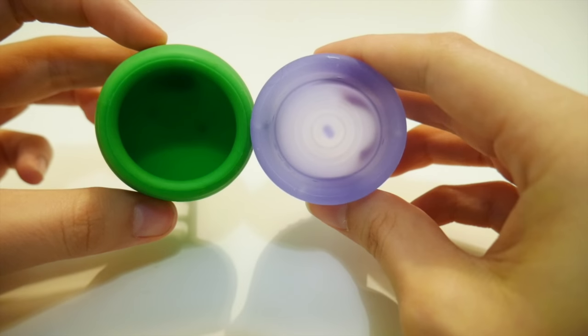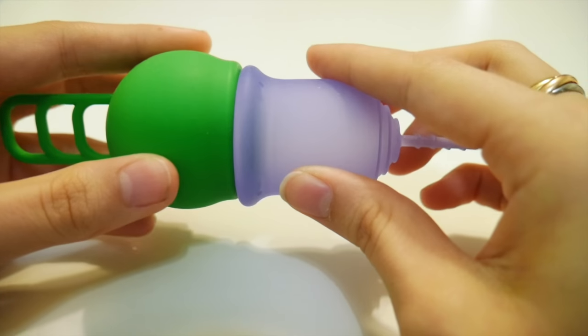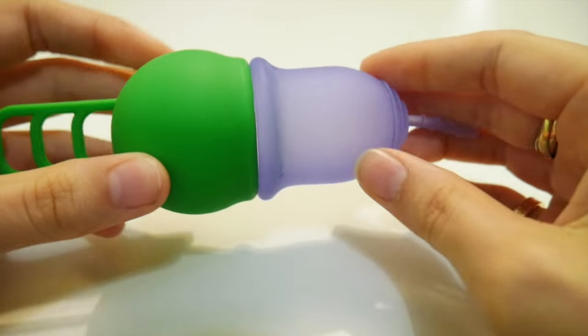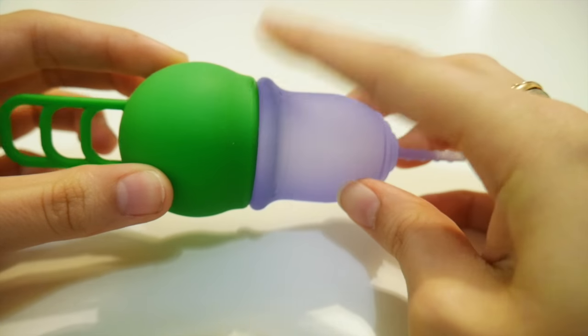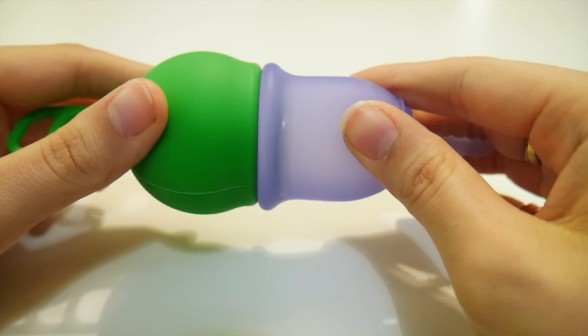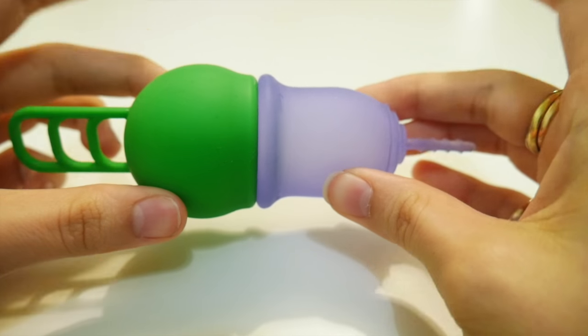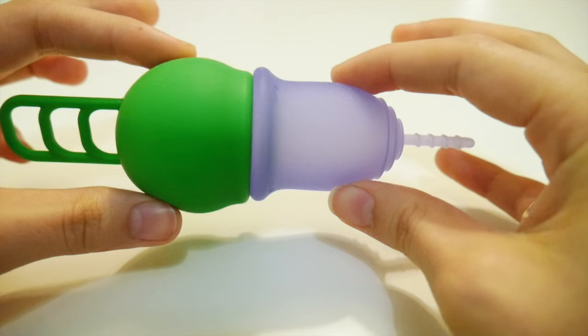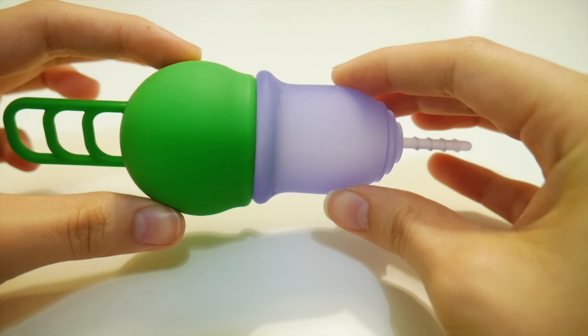Diameter wise, if I put them together you can see the top of the cup is not too different actually in diameter. They're pretty similar, if anything the Lenna is slightly wider, but obviously the body of the cup is significantly wider on the Marula than it is on the Lenna.